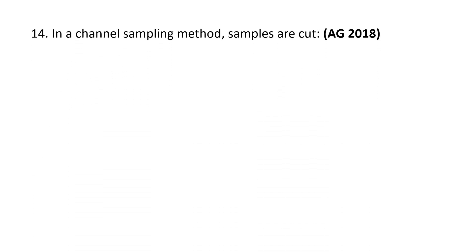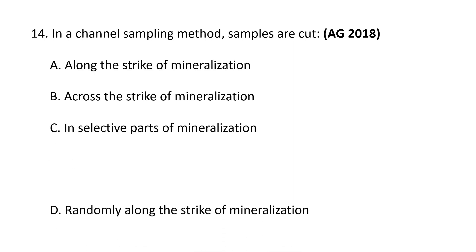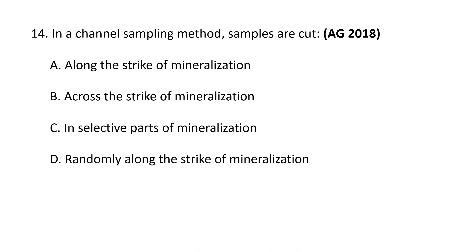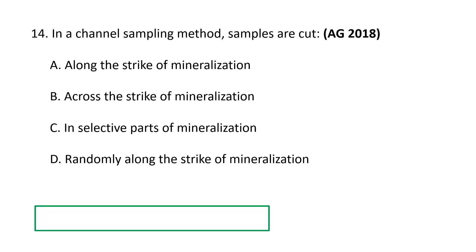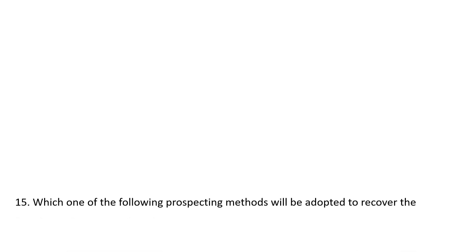Next question. In a channel sampling method, samples are cut: A. Along the strike of mineralization, B. Across the strike of mineralization, C. In selective parts of mineralization, D. Randomly along the strike of mineralization. The correct answer is B — samples are cut across the strike of mineralization.